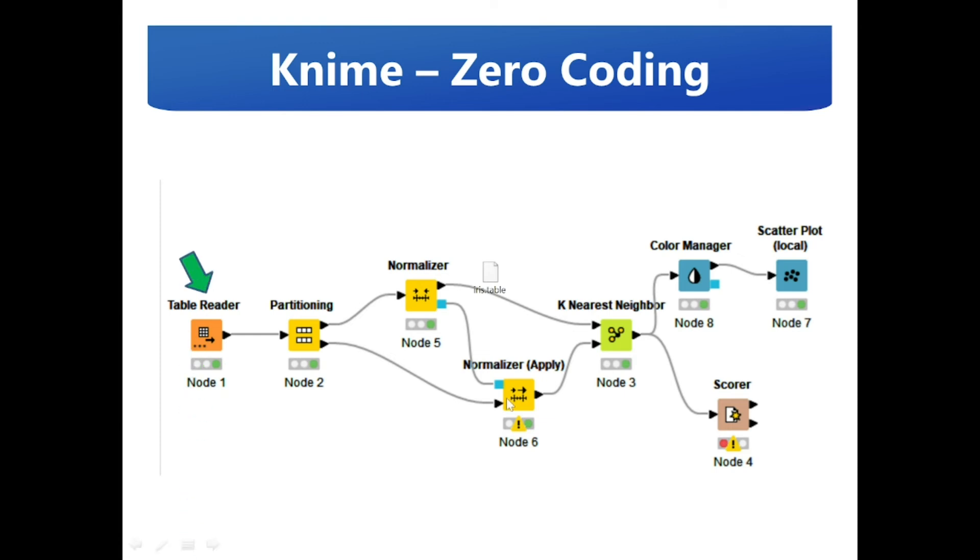The flow is going to contain the table reader node, the partitioning node to divide the dataset into training set and test set, the normalizer node to normalize the value of all numeric columns, the normalizer apply node to normalize the test data, and the K-Nearest Neighbor node for classification. To visualize the output in colorful manner we have color manager node and scatter plot node. Finally, we have a scorer node to validate our output.